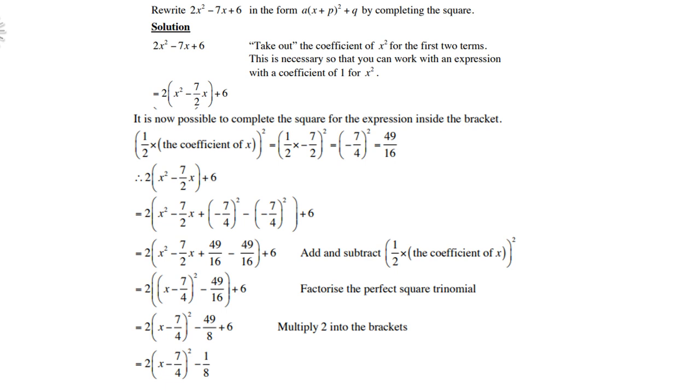So remember, it is a half times 7/2, all squared, and it gives you -7/4, which is 49/16. So don't forget how to do that.